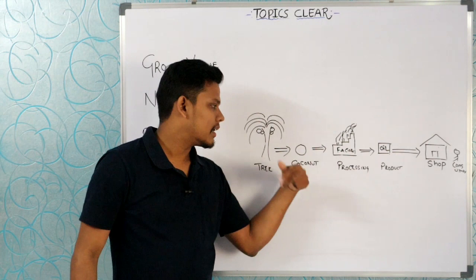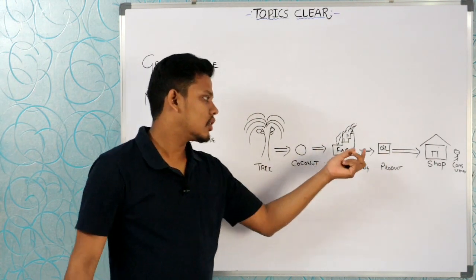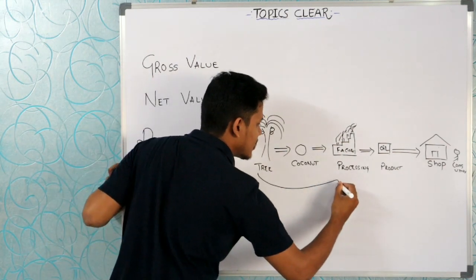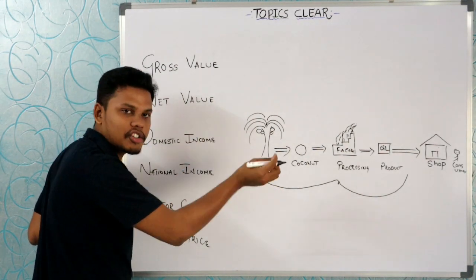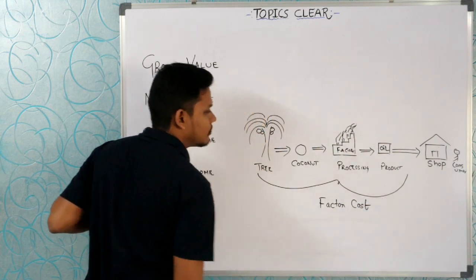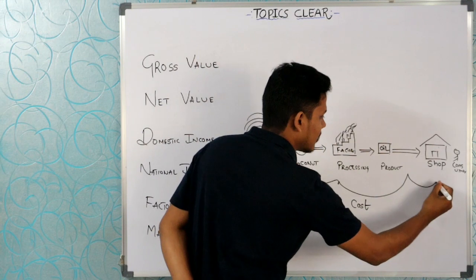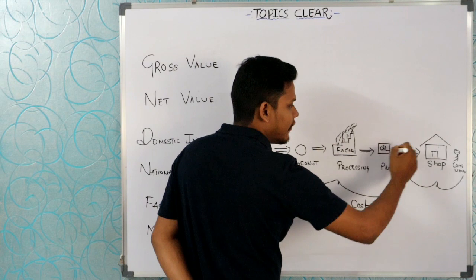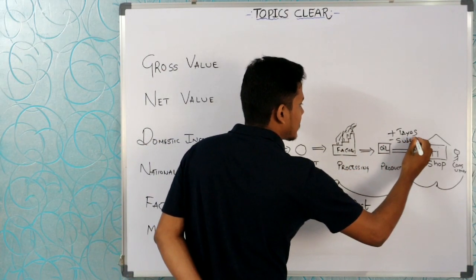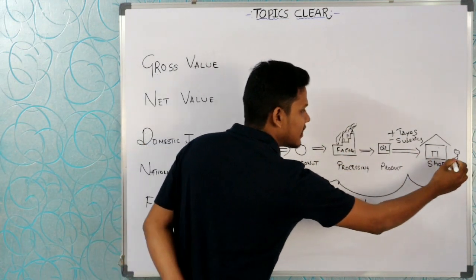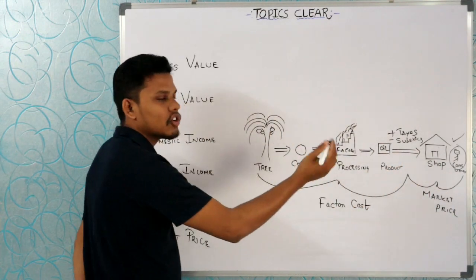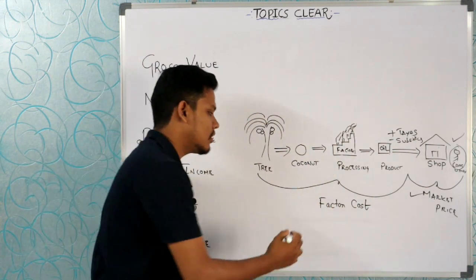Coconut tree → processing → final product → coconut oil. The consumer buys the oil. The income includes tax minus subsidies. When the final price is what the consumer pays, it is the market price. The price of production is the factor cost.